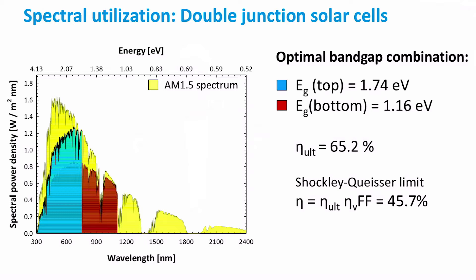Incident light first passes through a high band gap absorber material. This layer only absorbs high energy photons. Lower energy photons are not absorbed in this layer because it is transparent for them. The low energy photons are absorbed by the second absorber layer with a lower band gap. By stacking together two solar cells with absorber layers of different band gap, we reduce the thermalization loss and the non-absorption.